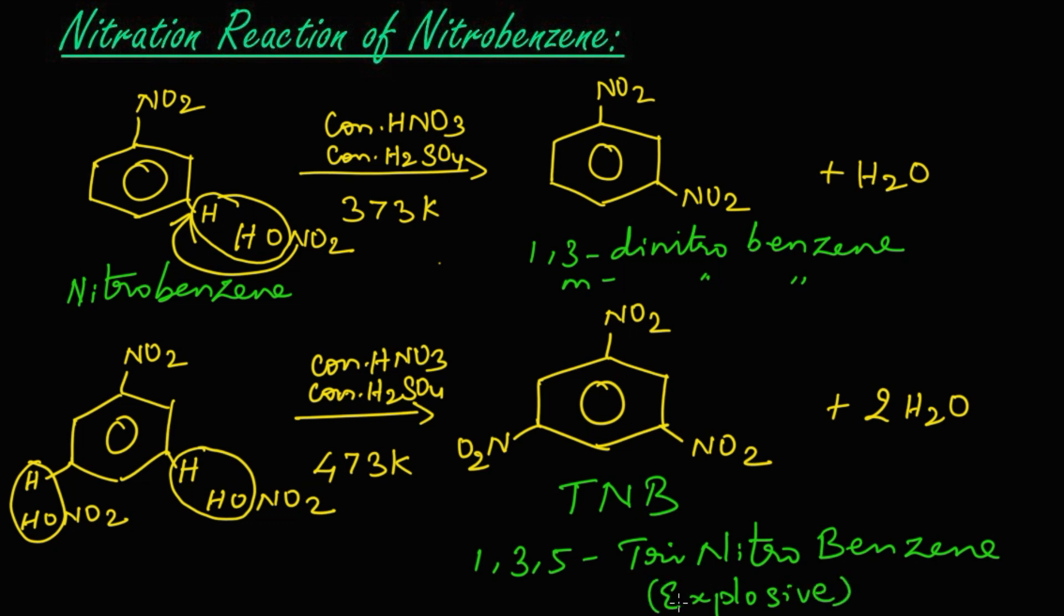Come on, let us summarize the reaction now. When nitrobenzene is nitrated at the temperature of 373 Kelvin, we get meta-dinitrobenzene or 1,3-dinitrobenzene. If we increase the temperature to 473 Kelvin, the nitration takes place in both the meta positions, so we get 1,3,5-trinitrobenzene, which is known as TNB, which is explosive.